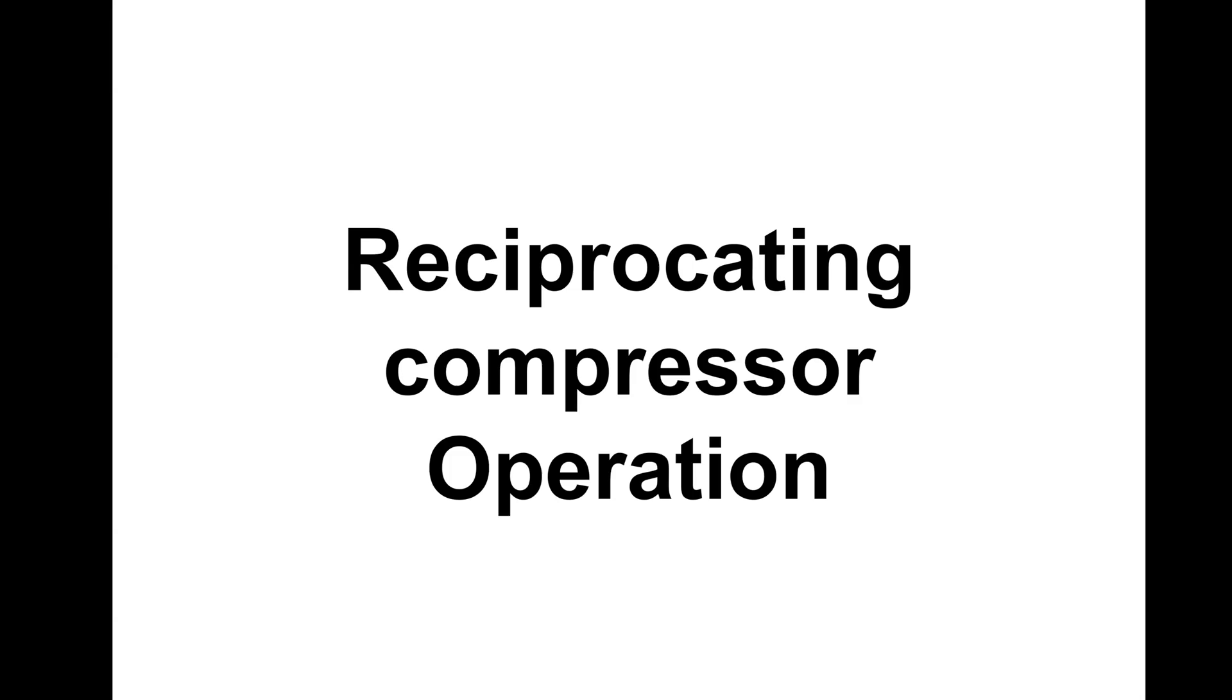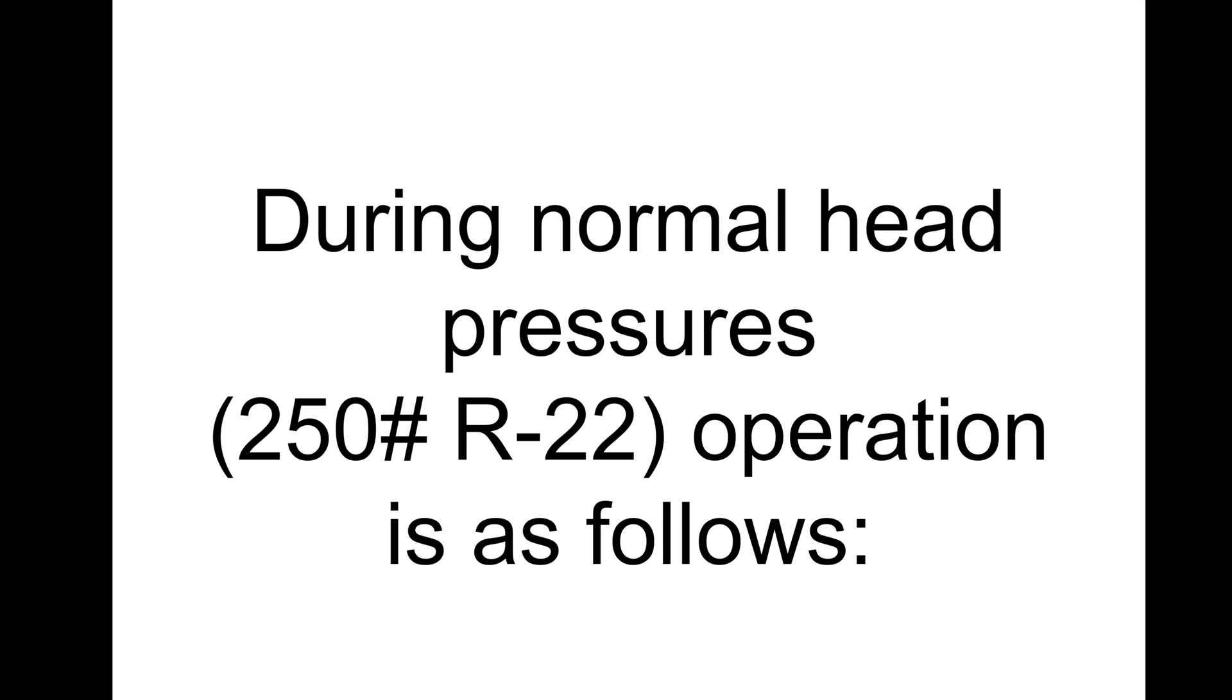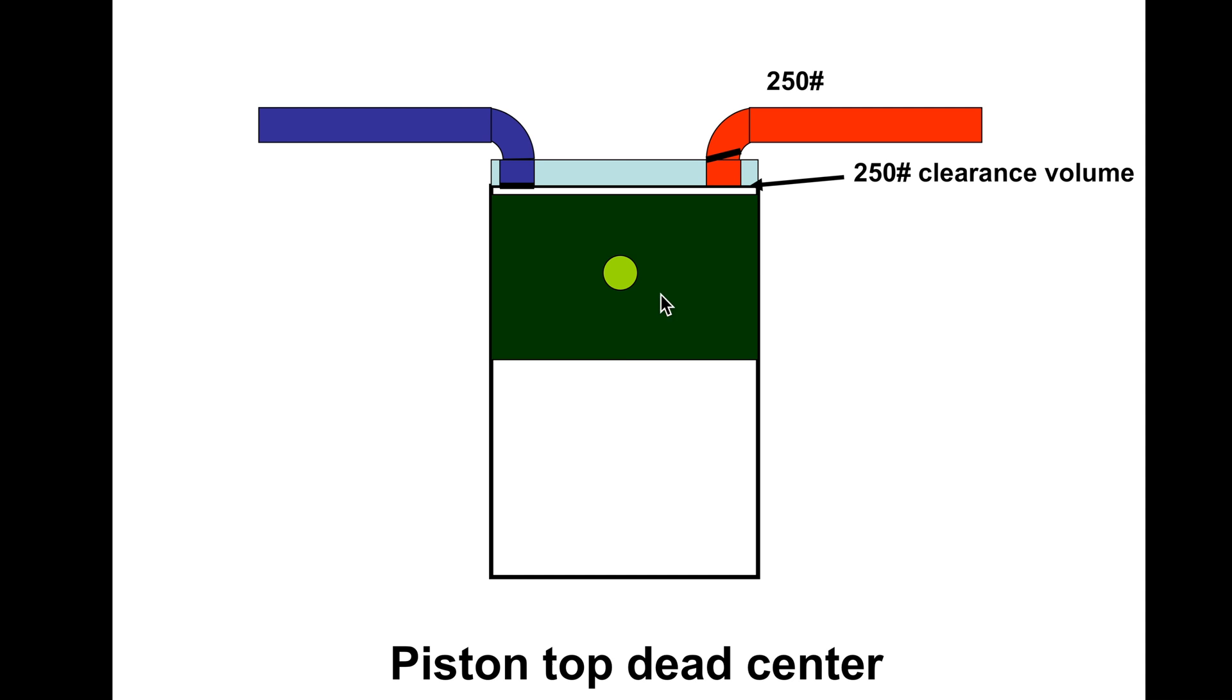This is reciprocating compressor operation. Specifically, we're going to be looking at the effective pumping action of a piston compressor with different pressures. Let's see if we can come up with some numbers here. 250 pounds is the head pressure. Now here we have a piston that's going to move up and down the cylinder suction line here.